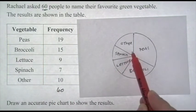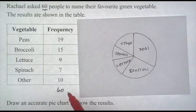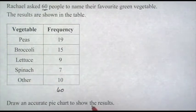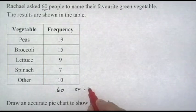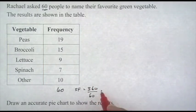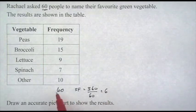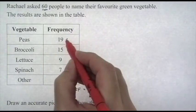The scale factor has to be 360 degrees divided by 60, and that is 6. So scale factor of 6, which means we've got to multiply everything in the table by 6 to change it from 60 to a total of 360.